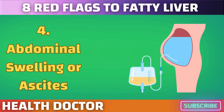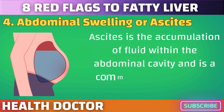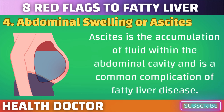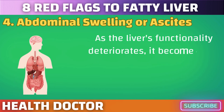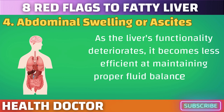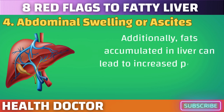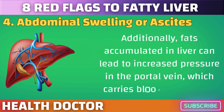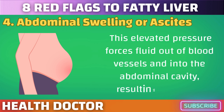Ascites is the accumulation of fluid within the abdominal cavity and is a common complication of fatty liver disease. As the liver's functionality deteriorates, it becomes less efficient at maintaining proper fluid balance in the body. Fats accumulated in the liver can lead to increased pressure in the portal vein, which carries blood to the liver. This elevated pressure forces fluid out of blood vessels and into the abdominal cavity, resulting in ascites.